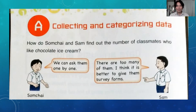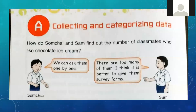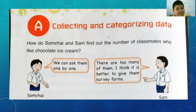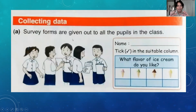When you say categorizing, from the verb categorize, classify, or organize. So how do Somchai and Sam find out the number of classmates who like chocolate ice cream? Somchai said: we can ask them one by one. Sam said: there are too many of them, I think it is better to give them survey forms. Look at the survey form. You prepare a piece of paper and distribute it to the people you want to ask. That's what you call survey forms.